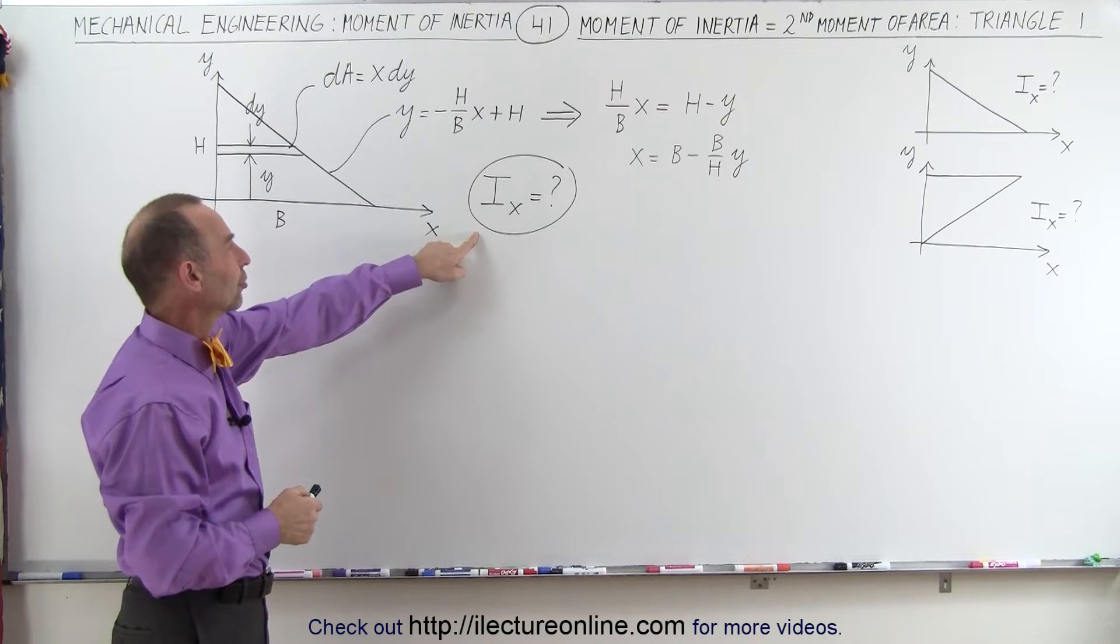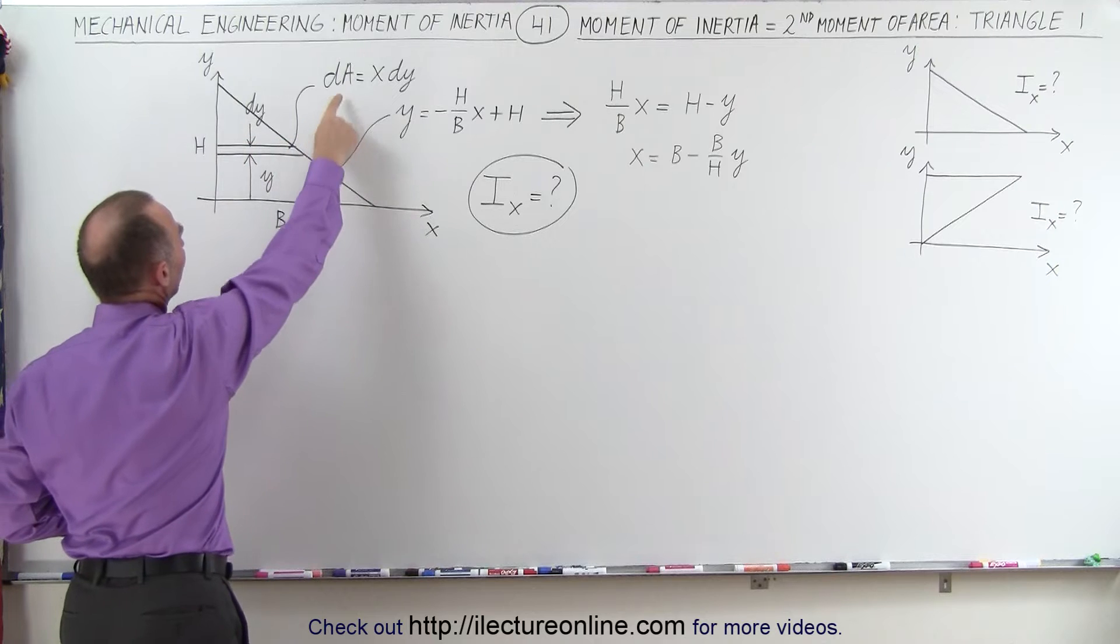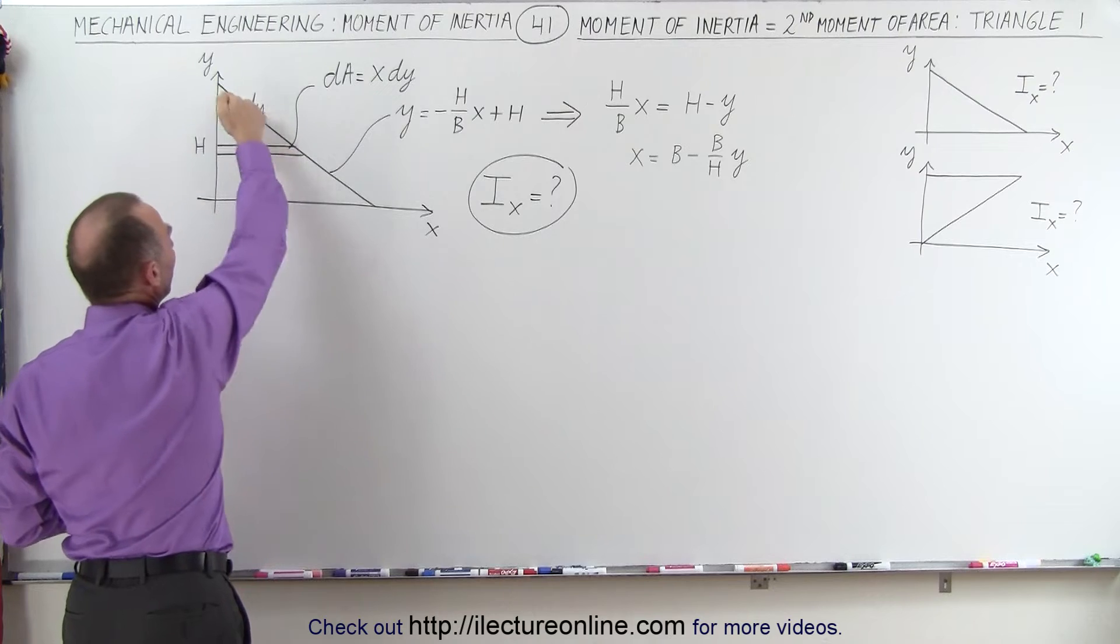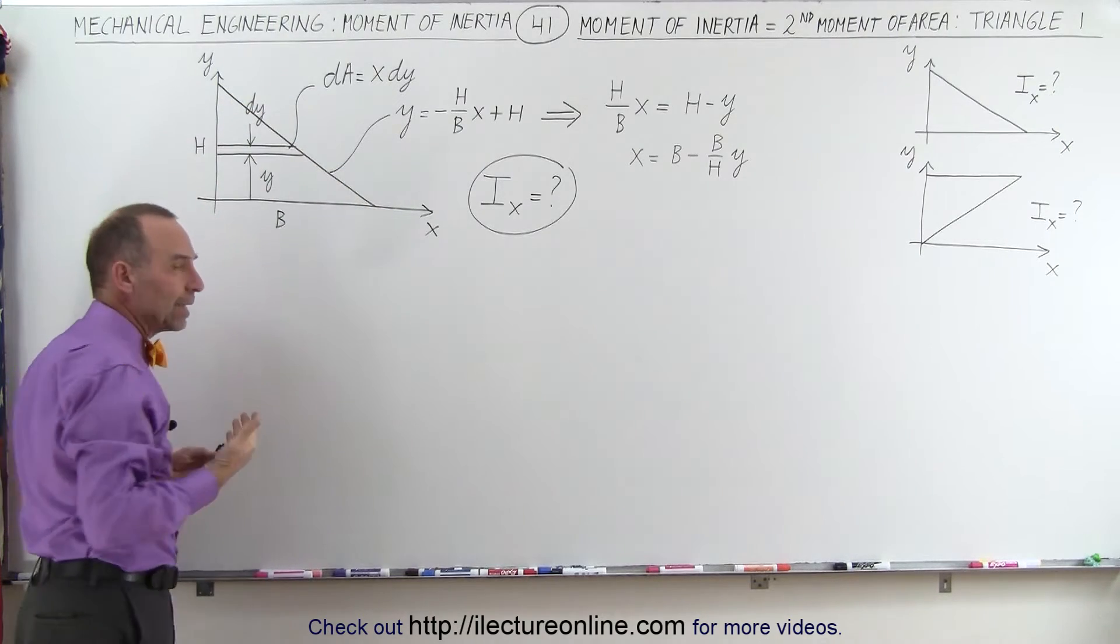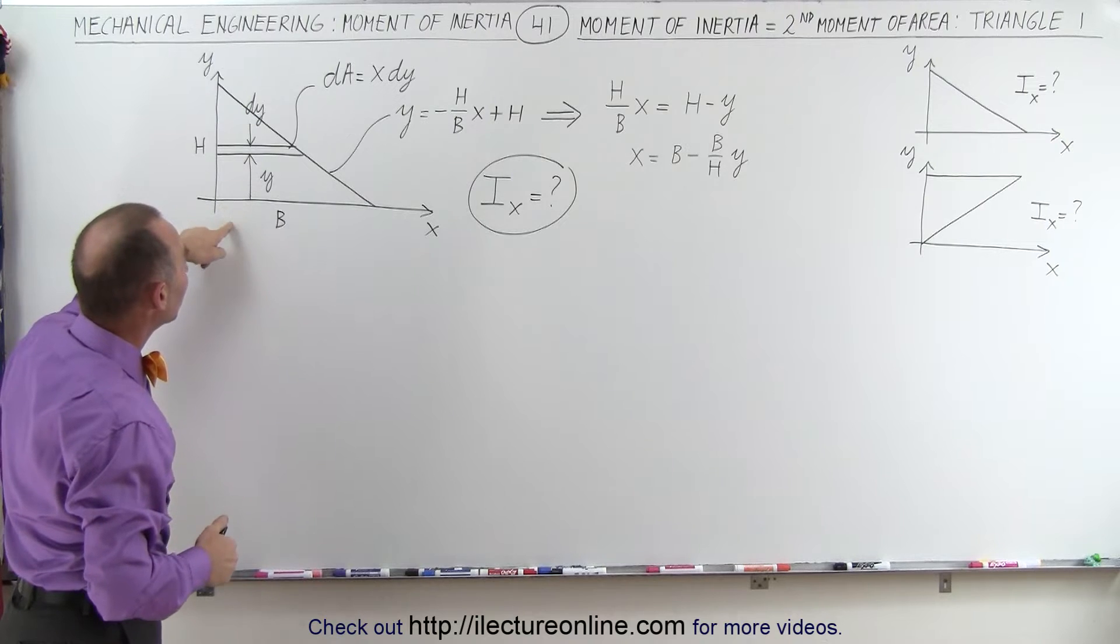So we're going to find the moment of inertia of this triangle. We already have a small little area element called dA, which has the width x and the height dy. The equation here is the equation y equals mx plus b from algebra, but the slope in this case is